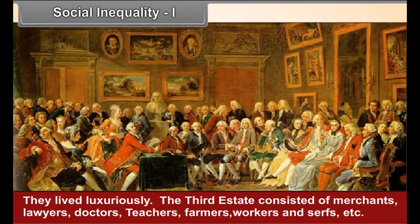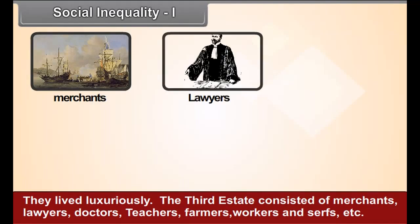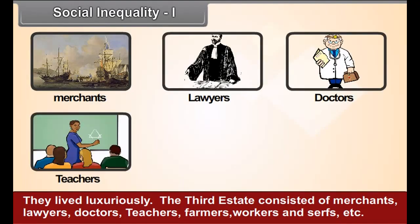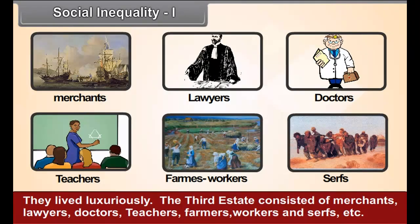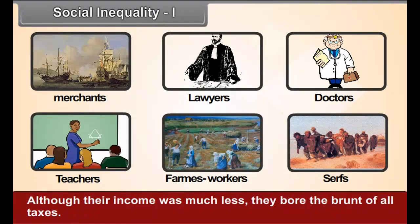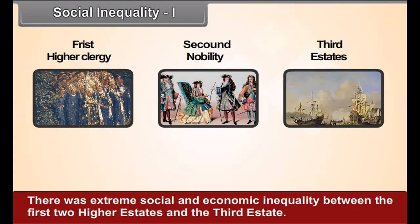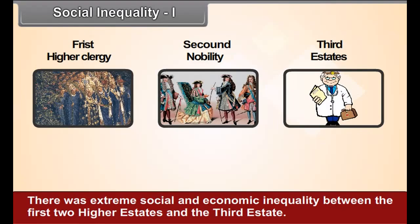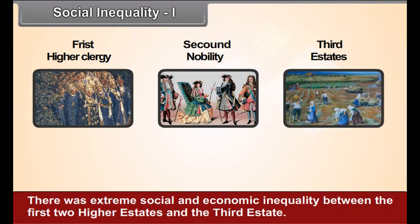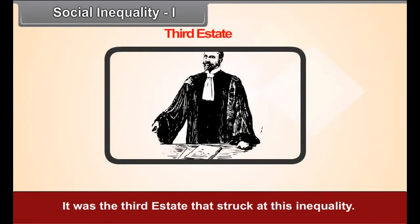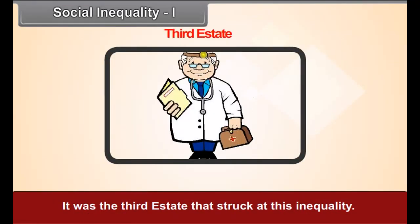The third estate consisted of merchants, lawyers, doctors, teachers, farmers, workers, and serfs. Although their income was much less, they bore the brunt of all taxes. There was extreme social and economic inequality between the first two higher estates and the third estate. It was the third estate that struck at this inequality.